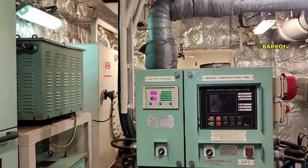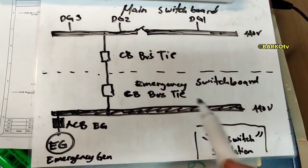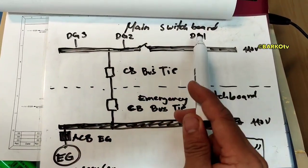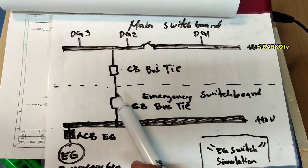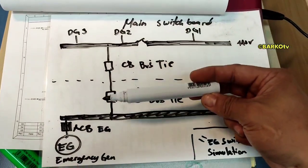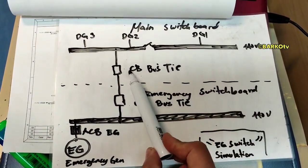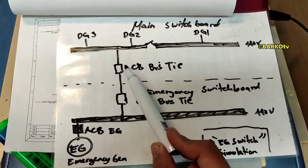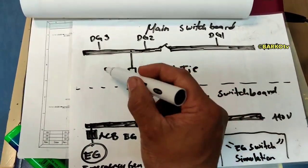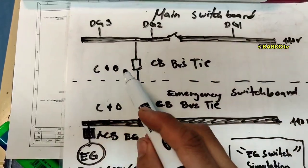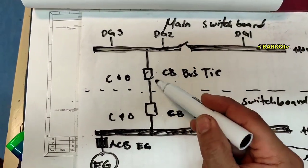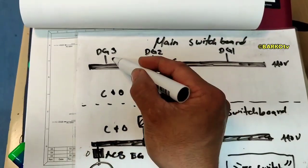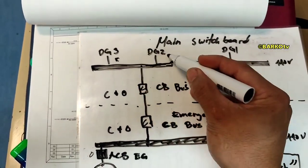This video is for emergency radiator or trouble during blackout test. For example, DG1, DG2, DG3 — there are two bus tie breakers. One is located at the main switchboard and one is located at the emergency switchboard. In normal operation this bus tie is close, meaning the main switchboard is supplying the emergency switchboard.